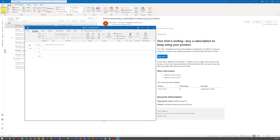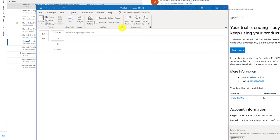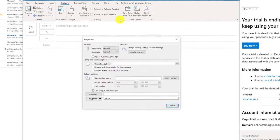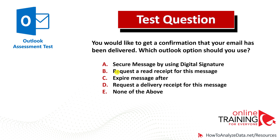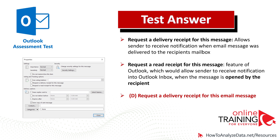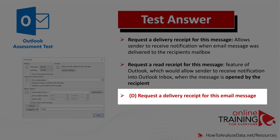When you create a new email message in Outlook, you can configure available options to track delivery. Navigate to the Options section and click the Tracking extension box. In the tracking properties, you have two choices: Request a delivery receipt for this message, or Request a read receipt for this message. Because the question asks whether the original email has been delivered, the correct choice is Choice D, Request a Delivery Receipt for this message. Outlook provides these two different options for tracking email messages.